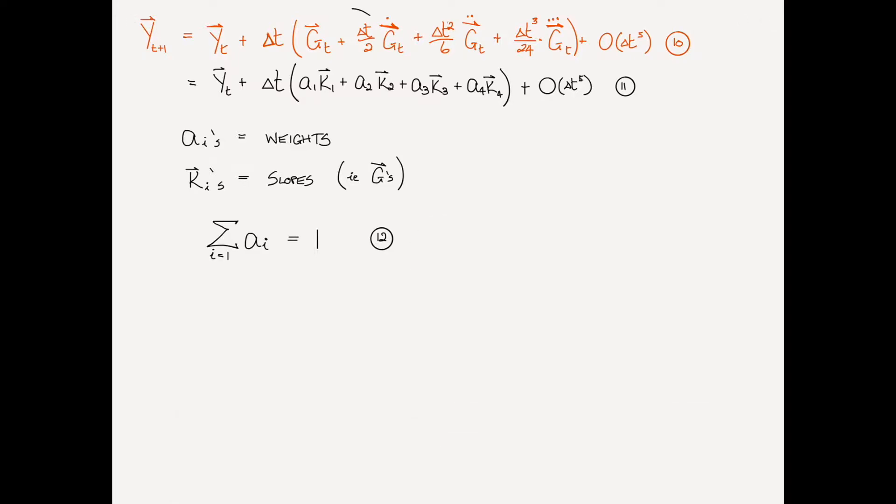We've included in general the first four terms, actually five terms because we've included that one, but we've included the terms up to the fourth order. Any terms of order five and greater, meaning delta t to the power of five and greater, we ignore.